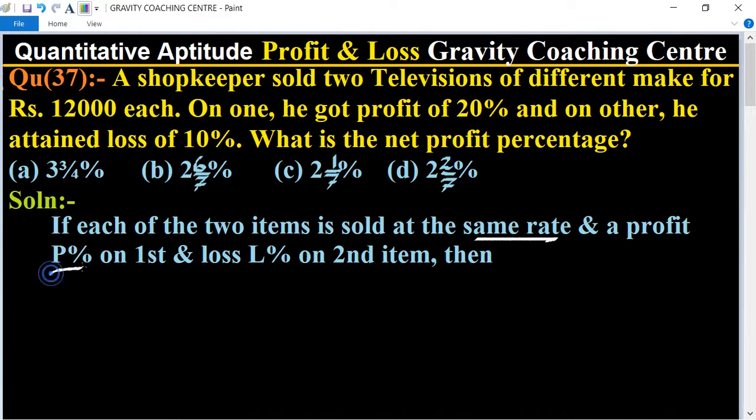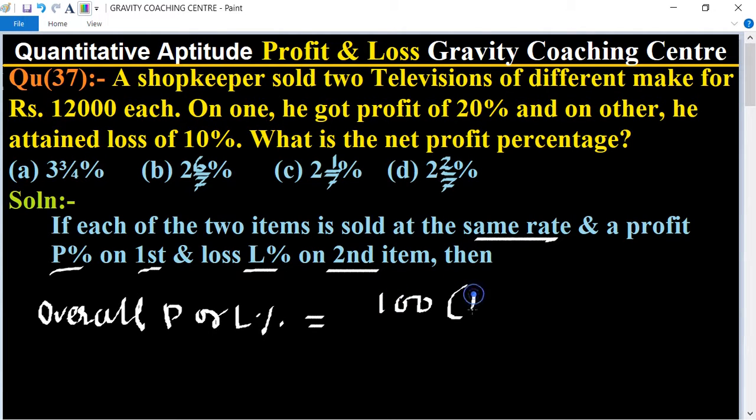and loss L% on second item, then the overall profit or loss formula is: overall profit or loss percent equals 100(P-L) minus 2×P×L, upon 200 plus (P-L).